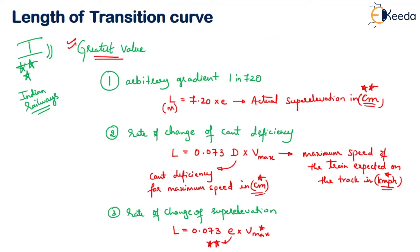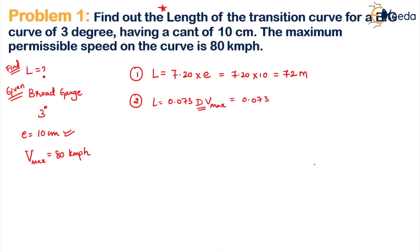In the question, Vmax is given as 80 kmph. This is correct as required. Now we need to find the D value, which is the cant deficiency for maximum speed.